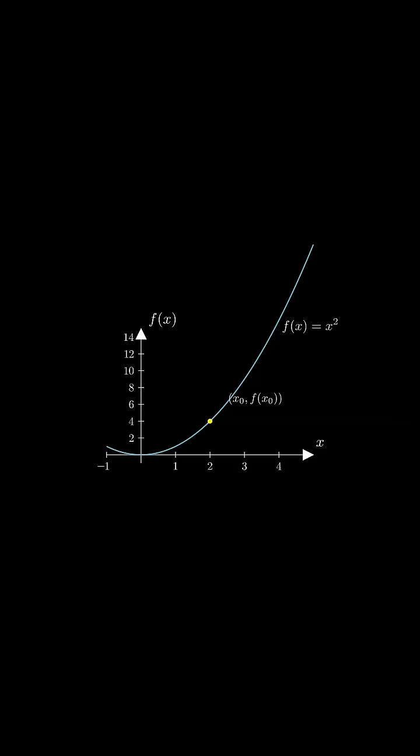Jab x ki value 2 hogi, tab function ki value hogi 4. To understand how fast the function is changing at this point, hum yaha par ek secant line banayenge. A secant connects two points on the curve and gives the average rate of change.